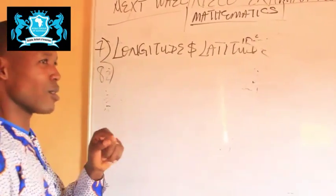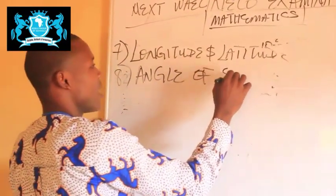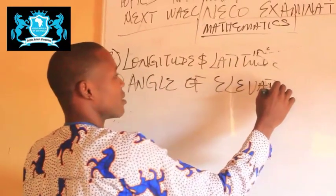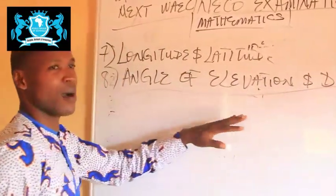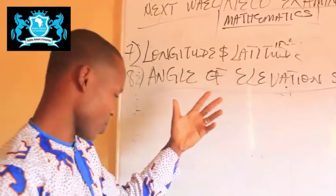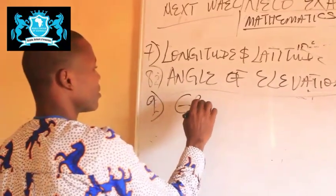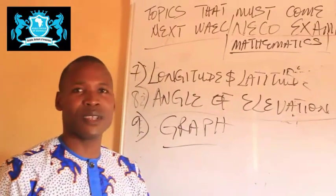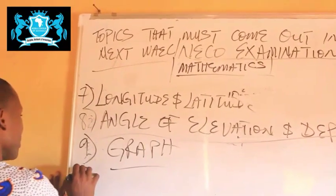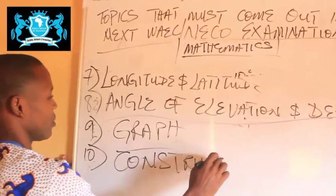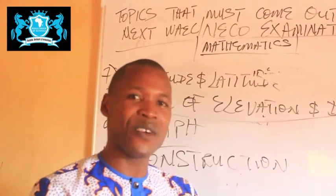The next topic you should expect in your next exam is Angle of Elevation and Depression. This one must come out every year in mathematics, so get yourself ready for it. Of course, Graph also comes out every year. The next one that will come out every year is Construction. Construction must come out every year.